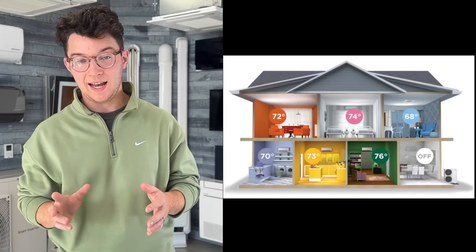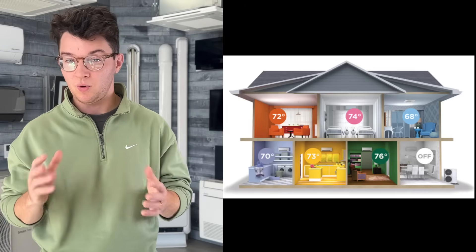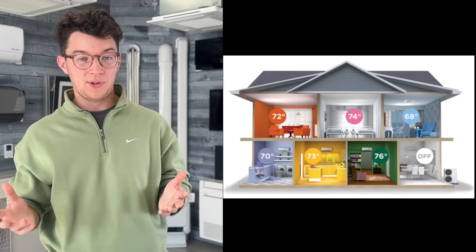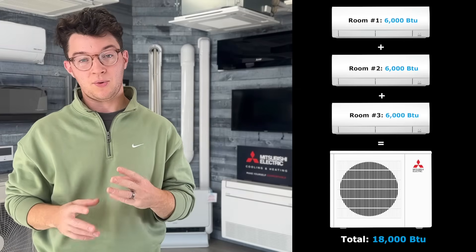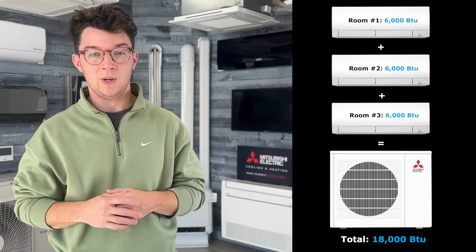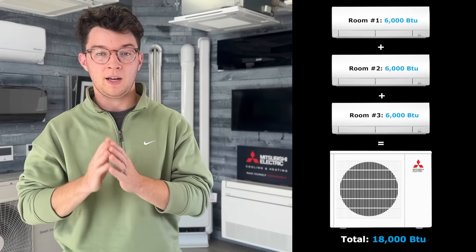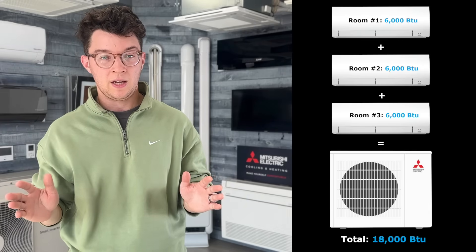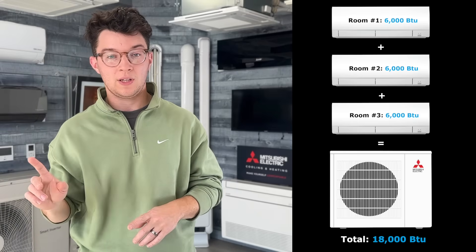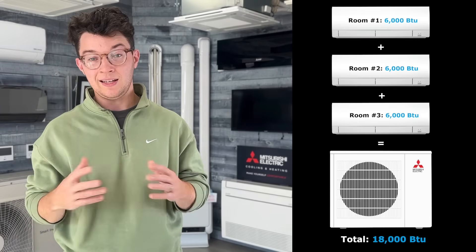Sizing a single room is fairly simple — if you have an 18,000 BTU indoor unit, your outdoor unit is also going to be 18,000 BTUs. Now, what if you want to connect multiple indoor units for multiple rooms to one outdoor unit? You start by sizing the indoor units and then add up those calculations to determine the outdoor unit size. For example, if you have three bedrooms and each bedroom requires a 6,000 BTU indoor unit, you add all three together and get 18,000 BTUs total.